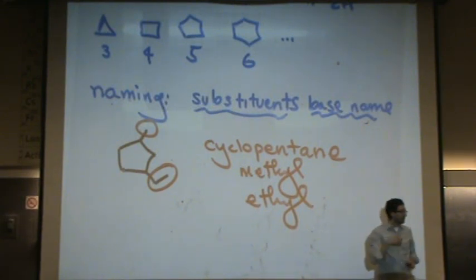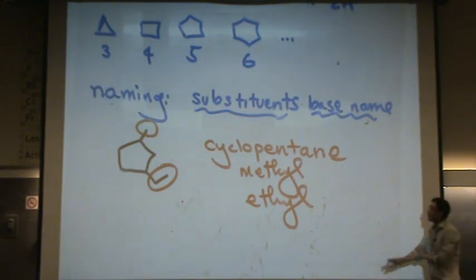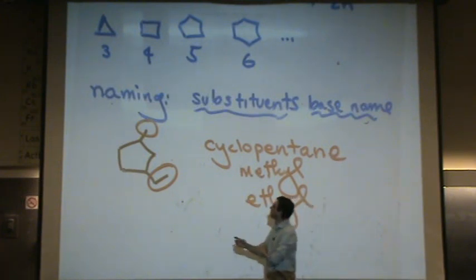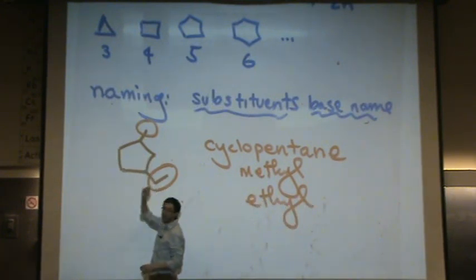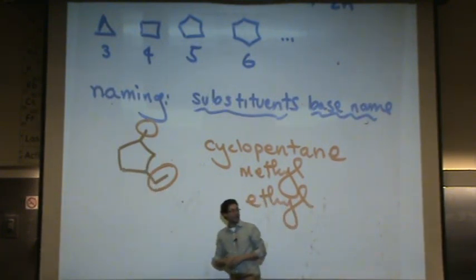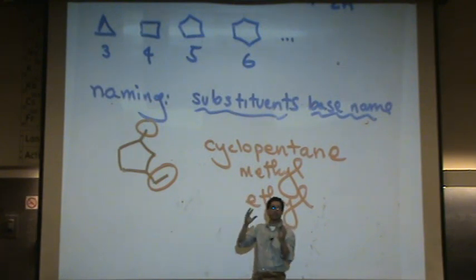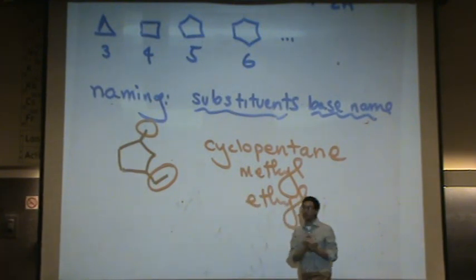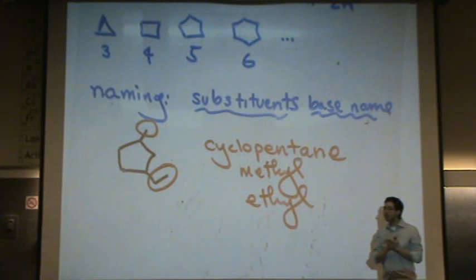The numbering is the funkiest part. Where do I put the one? I want to put the one such that I get the lowest set of numbers, just as before. Where is that? There's five positions to choose from, because there's five places in the ring to put a one. And you can go counterclockwise or clockwise. So there's ten options in this case. Where do you want the one?